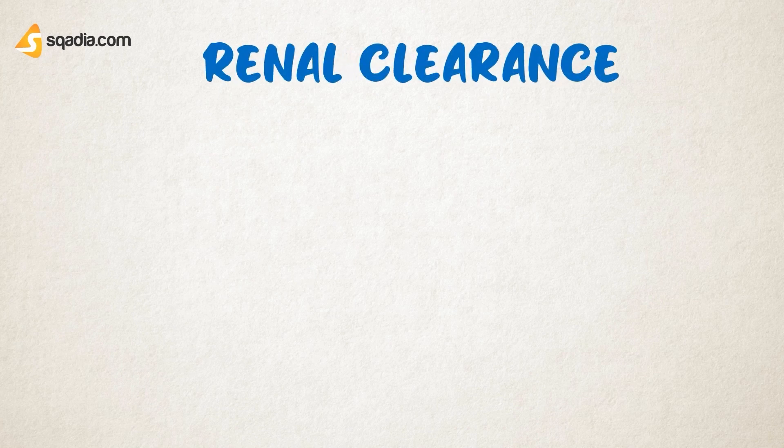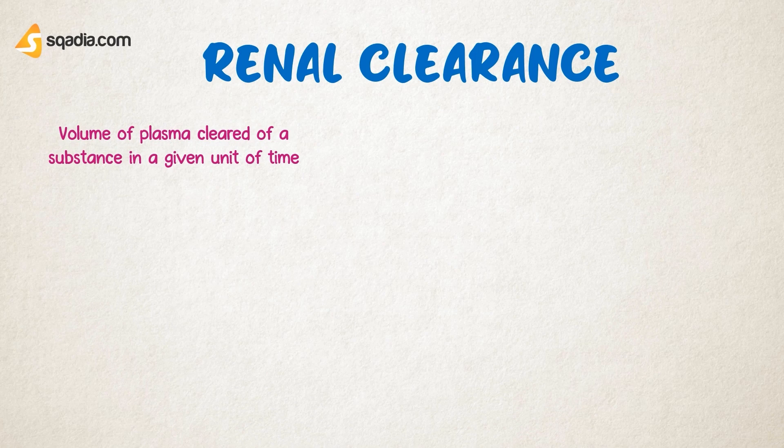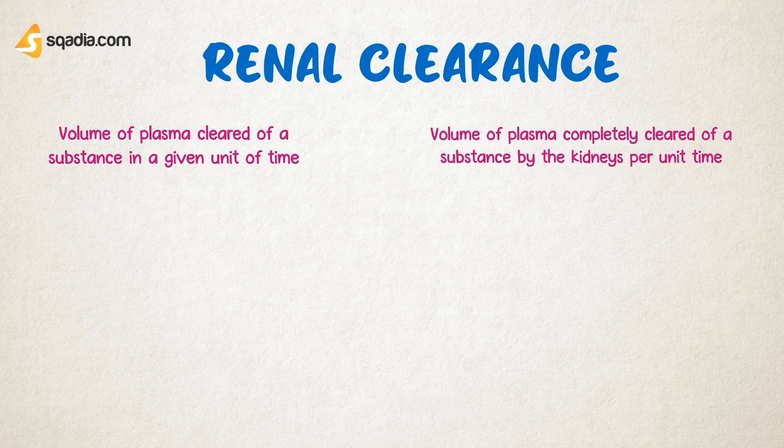In this video, we will discuss renal clearance. Renal clearance means the amount of plasma that is cleared of a substance in a given unit of time, or it is the volume of plasma that is completely cleared of a substance by the kidneys per unit time. Renal clearance is the process that occurs in the kidneys and it shows the volume of plasma that would need to be completely cleared of a substance per minute in order to produce the amount that is found in the urine.